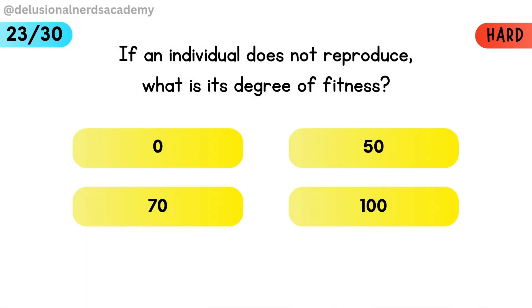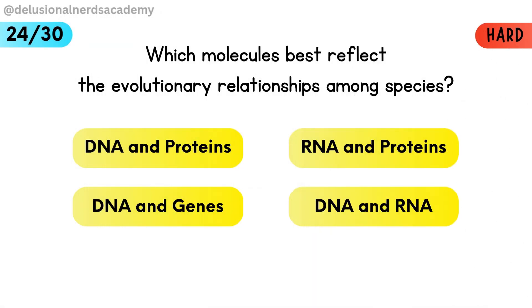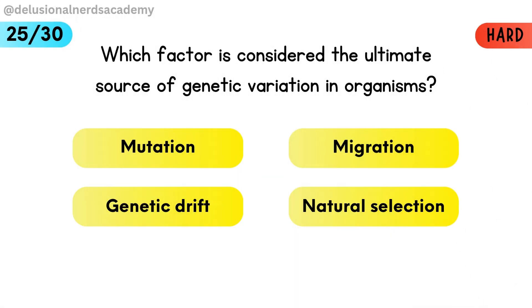If an individual does not reproduce, what is its degree of fitness? An organism that does not reproduce has zero fitness. Which factor is considered the ultimate source of genetic variation in organisms? Mutation is the ultimate source of variation.